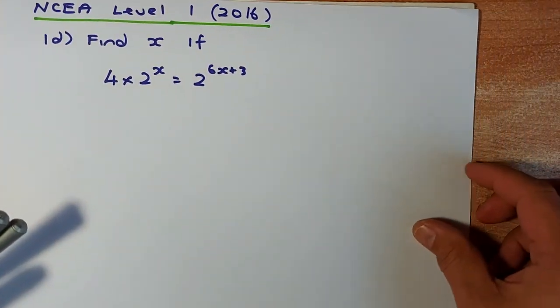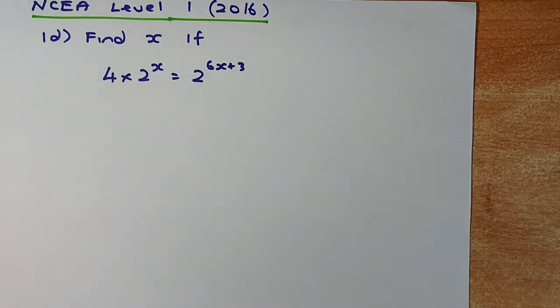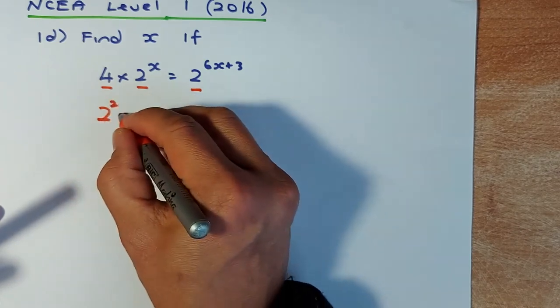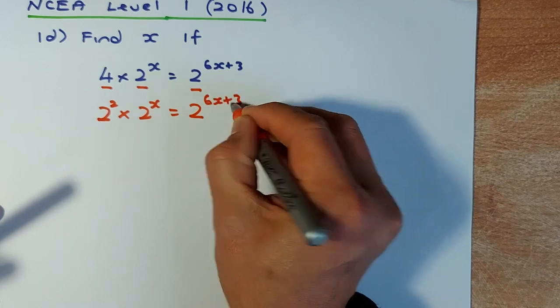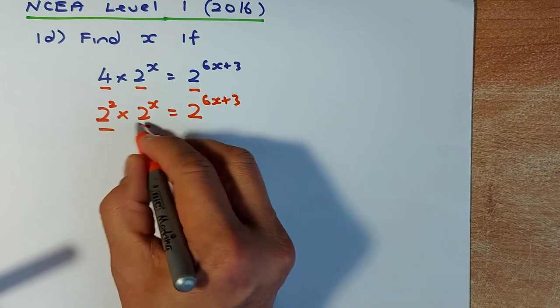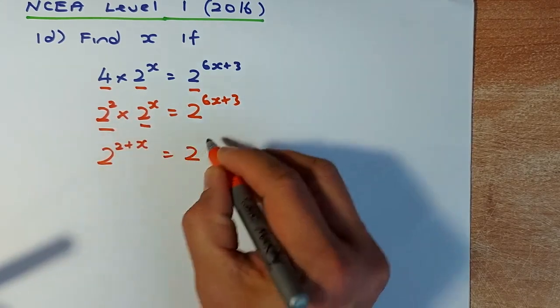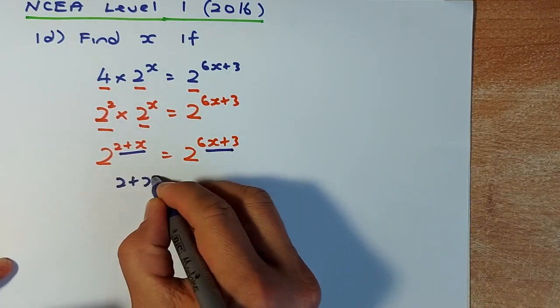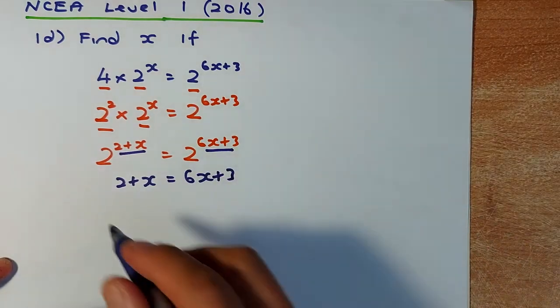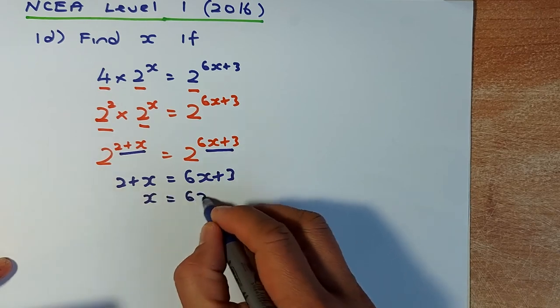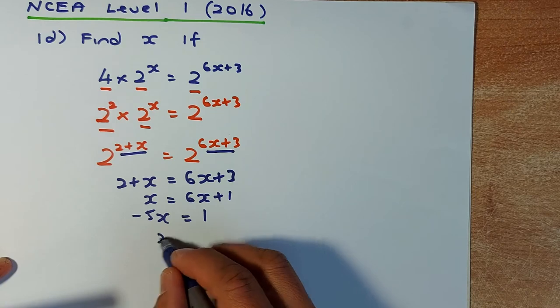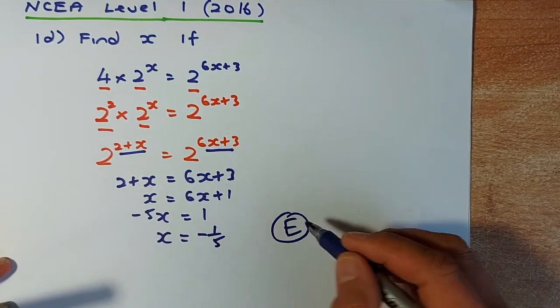Now we do the Excellence question from NCEA Level 1 2016. Whenever you have an index question, try to make the same base. So 2 to the power of 4 is the same as 2 squared times 2 to the x, which equals 2 to the 6x plus 3. Adding the powers on the left: 2 to the power of 2 plus x equals 2 to the 6x plus 3. Since the base is the same, 2 plus x equals 6x plus 3. Subtracting 2 from both sides and then subtracting 6x from both sides: minus 5x equals 1, so x equals minus 1 over 5. That is an Excellence answer for 2016.